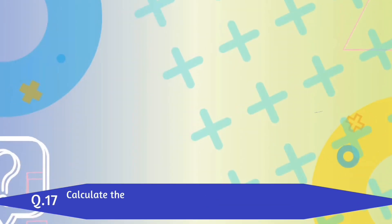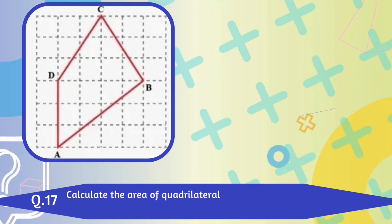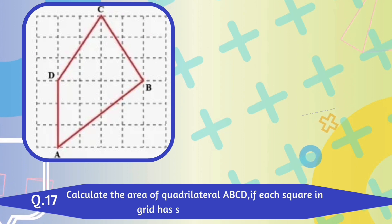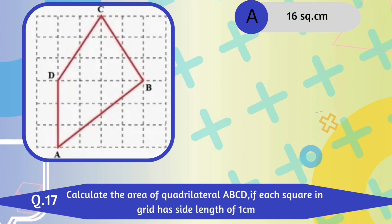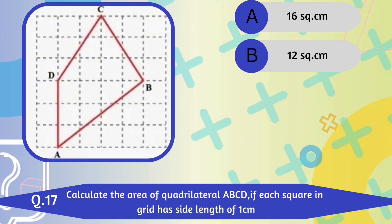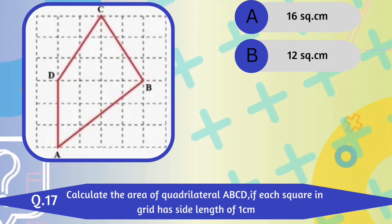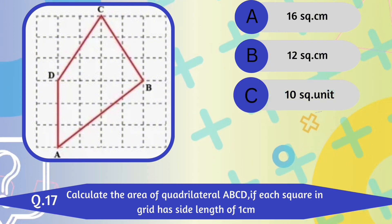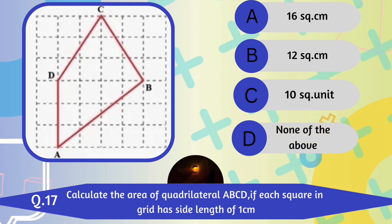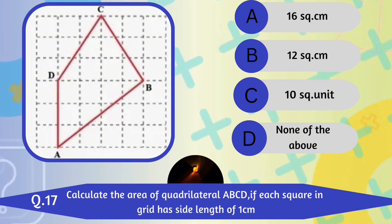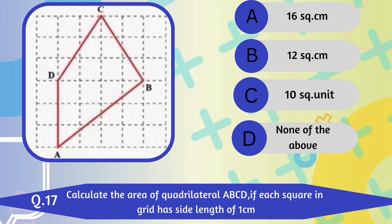Question number 17. Calculate the area of quadrilateral ABCD if each square in the grid has side length of 1 cm. A. 16 square cm. B. 12 square unit. C. 10 square unit. D. None of the above. 12 square cm is the correct answer.